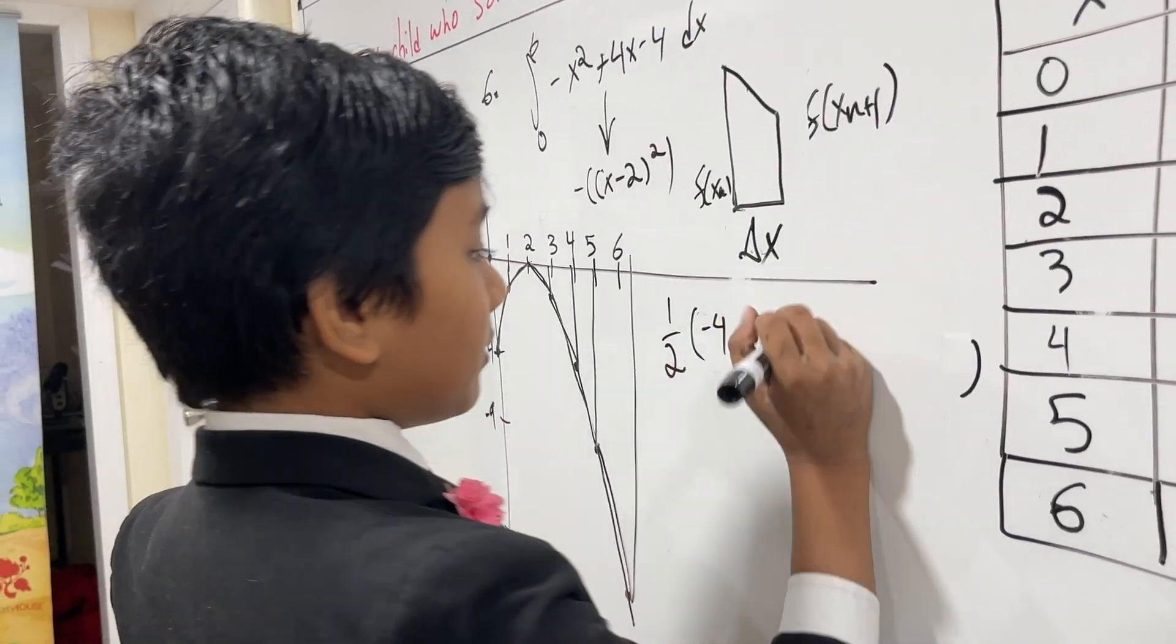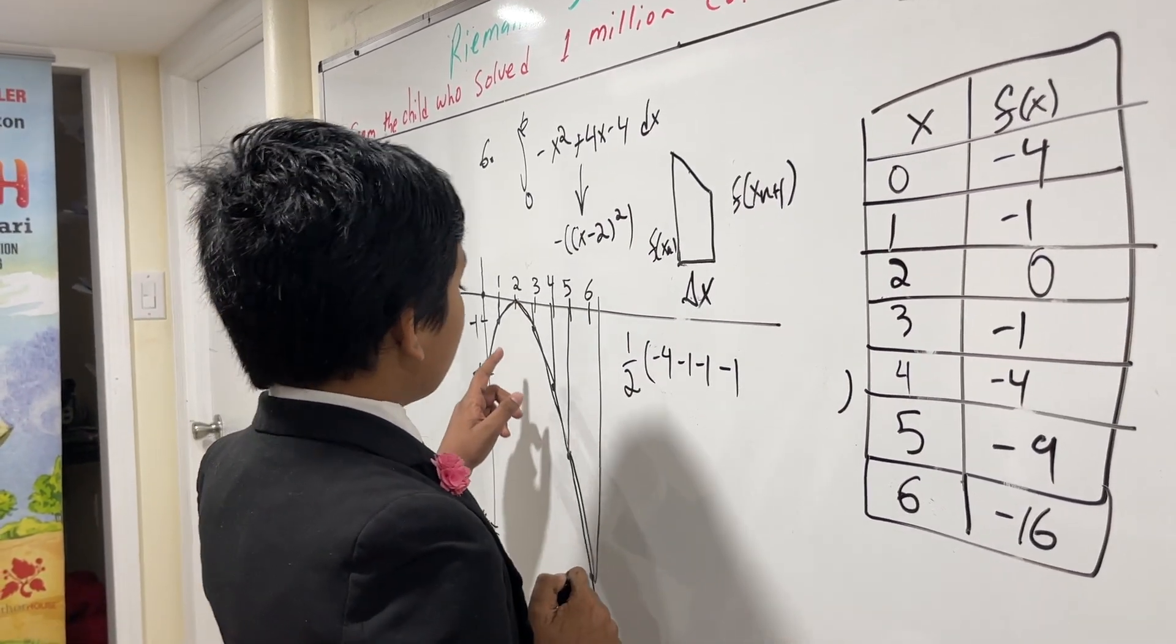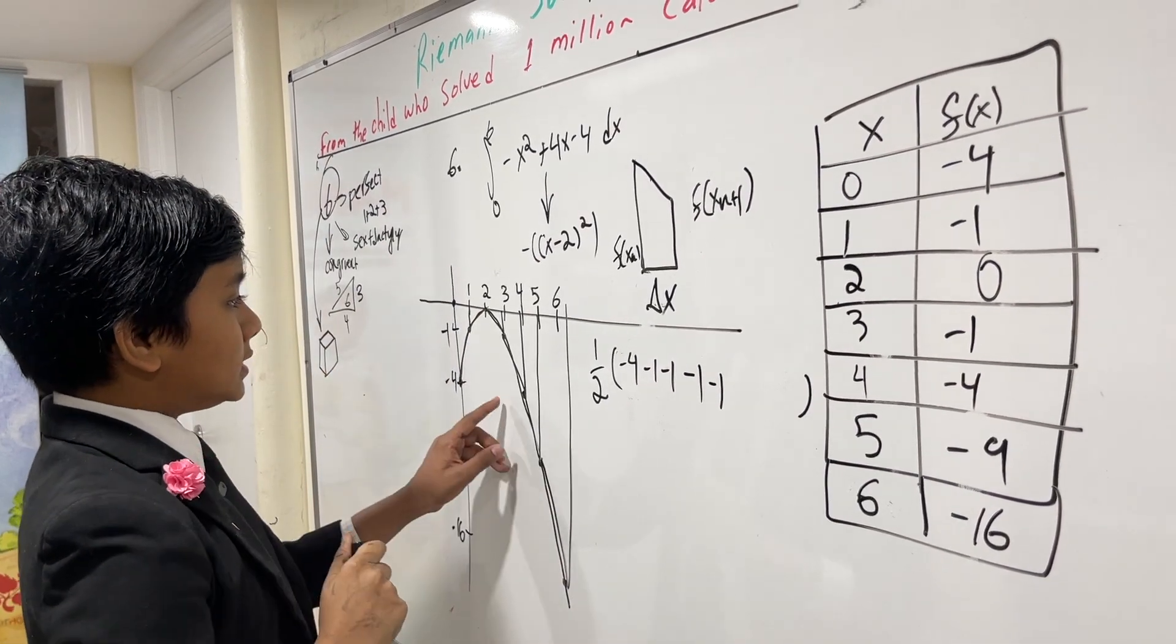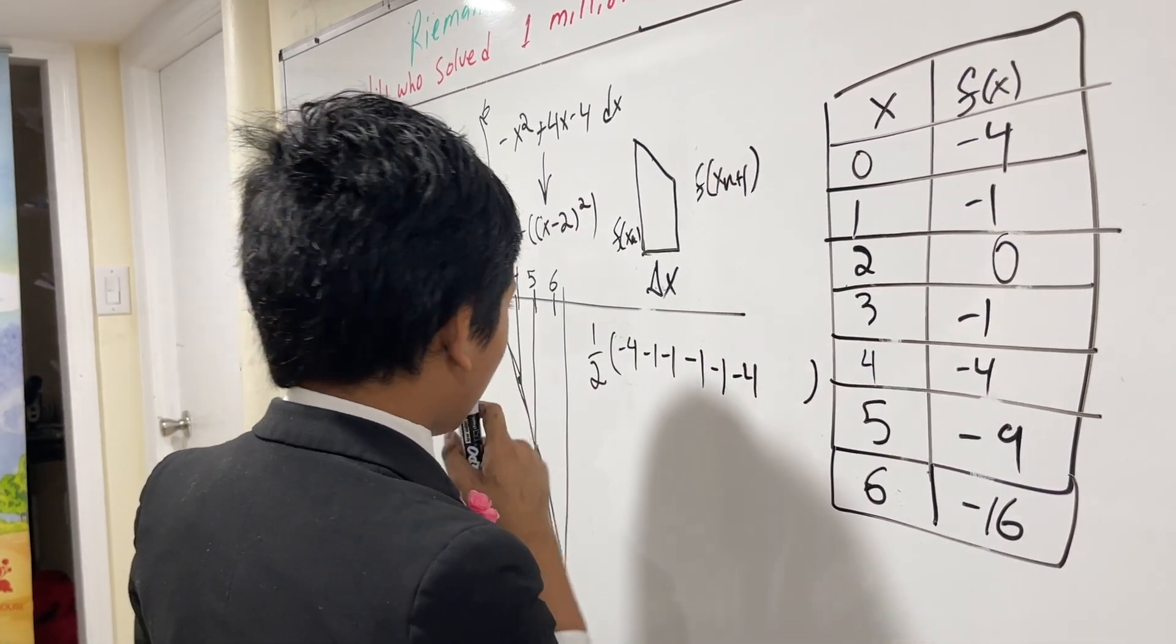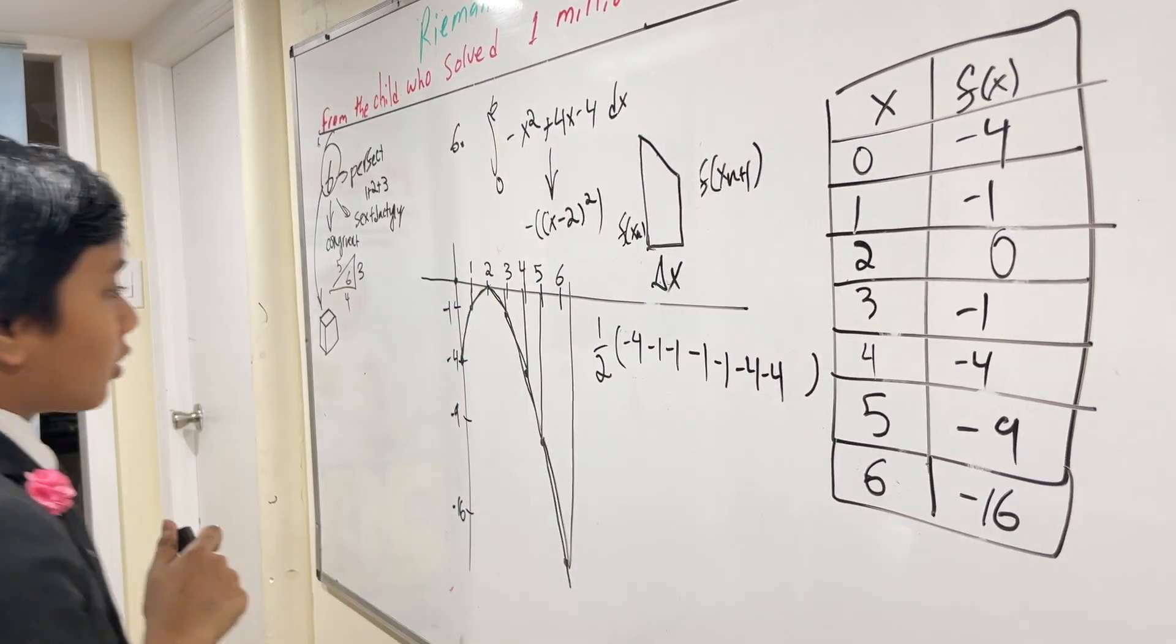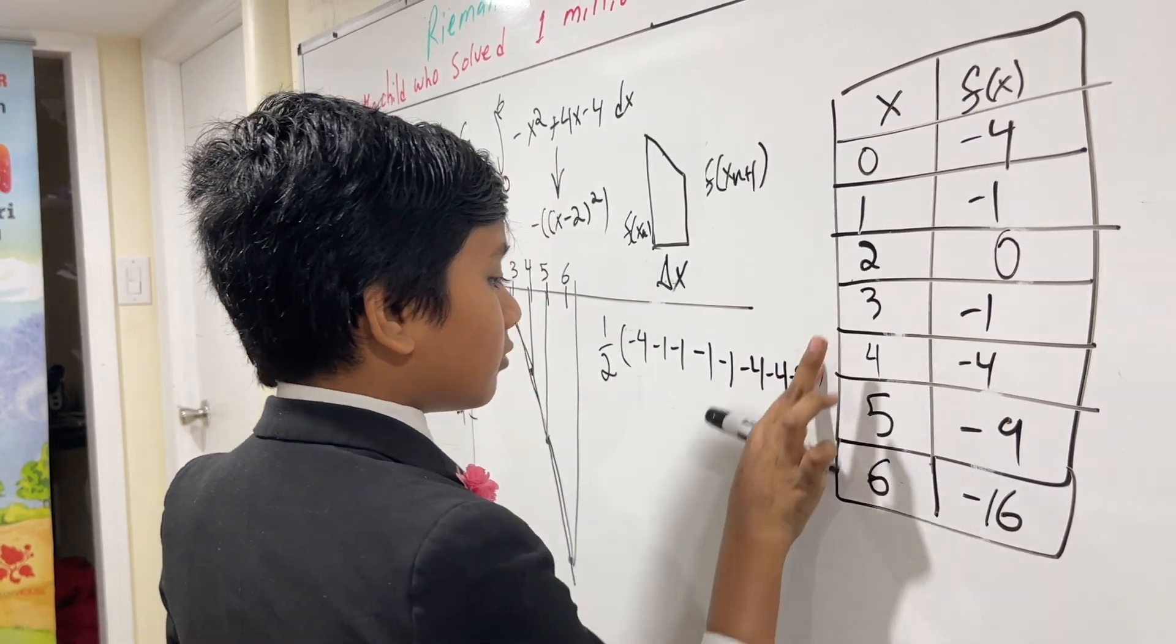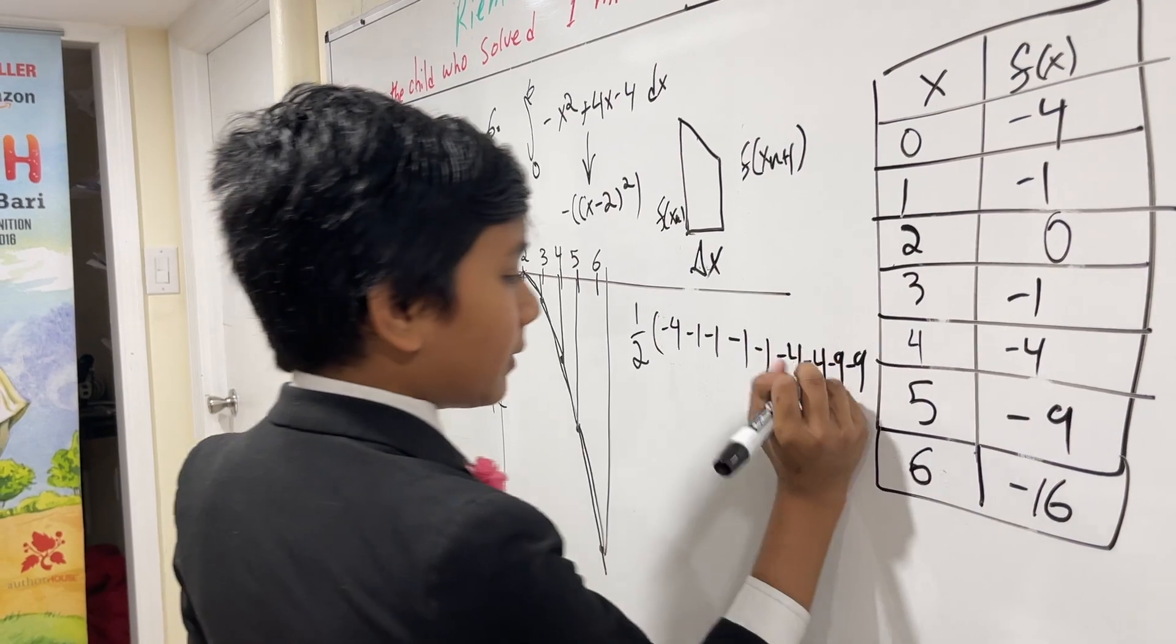What's f(3)? Minus one. What's f(3) again? Minus one. What's f(4)? Also minus one. No, no, no, not minus one—minus four. What is f(4) again? Minus four. What is f(5)? Minus nine. What is f(5) again? Minus nine. What is f(6)? Minus sixteen.